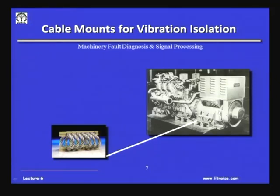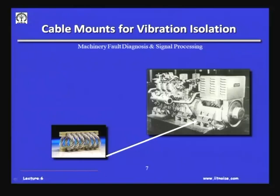For a generator driven by an engine: because of inertia forces and gas forces, engines produce unbalanced forces at certain orders that excite the foundation. This must be isolated using elastomer mounts or, increasingly nowadays, cable mounts. Cable mounts can flex in both directions — longitudinally and transversely — so they can take forces in any direction.